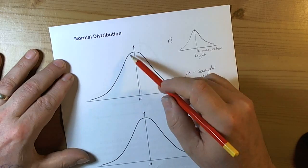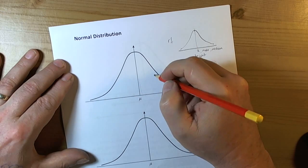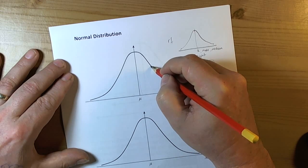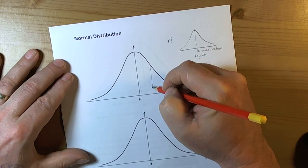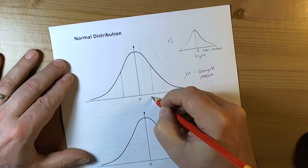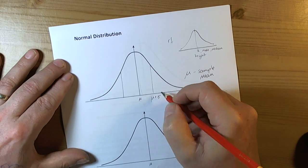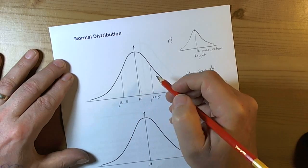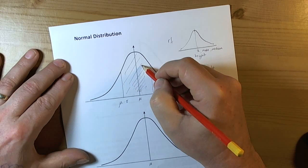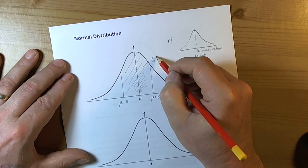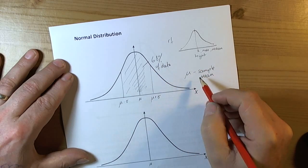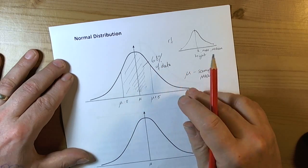As statisticians, we can consider how the spread of the data is measured using the standard deviation. If we go one standard deviation above the mean and one standard deviation below the mean, then for a normal distribution we find that roughly 68% of the data is within that boundary. We need to be familiar with that fact.